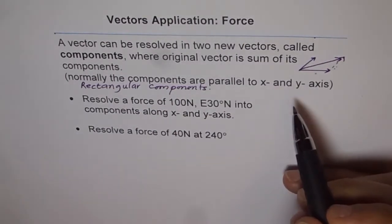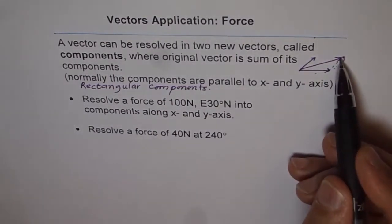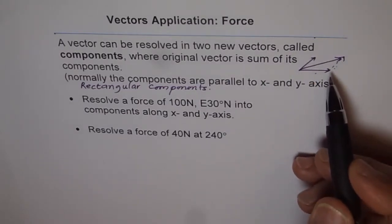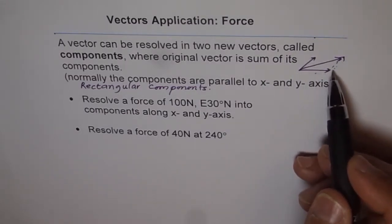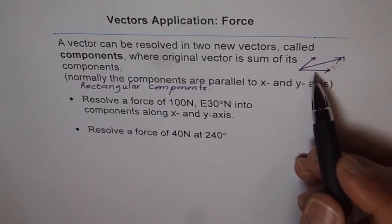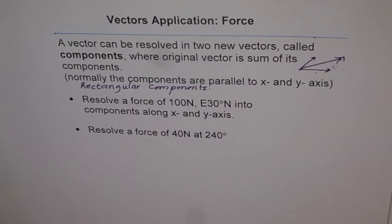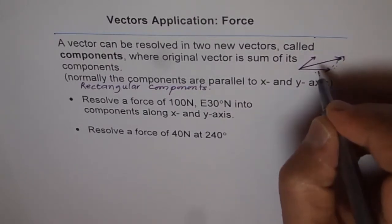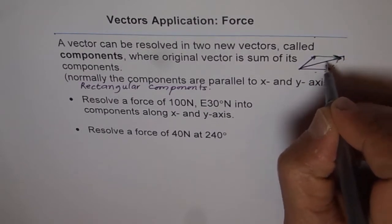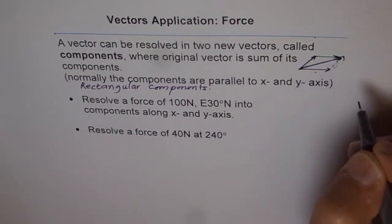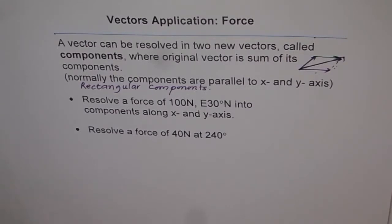So what we are saying is that if there is a vector, it can be resolved into two components, and the sum of those two components is the same as the original vector. A vector can have components which add up to give you the original vector. This is a very important concept which we use in solving problems related to force.